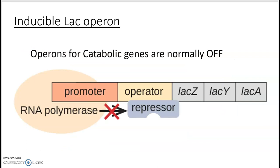Looking at the lactose operon, this is what's known as an inducible operon. It involves genes for breaking down the disaccharide sugar lactose — a catabolic gene operon. Normally catabolic gene operons are turned off because you don't need enzymes to break something down if the substrate isn't present. Unlike the tryptophan operon, the repressor here doesn't need to bind anything to bind DNA — this is the active form. It blocks RNA polymerase and the cell cannot make the message for lactose metabolism proteins.